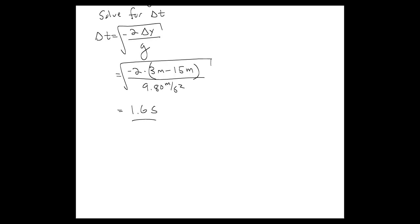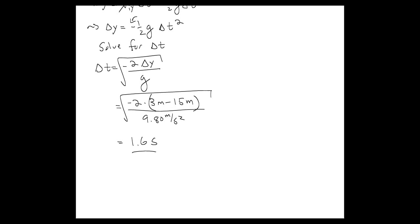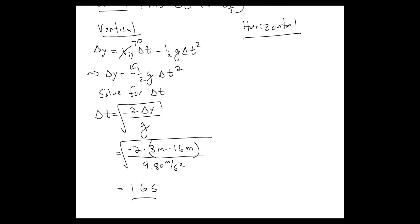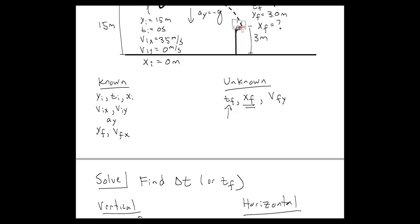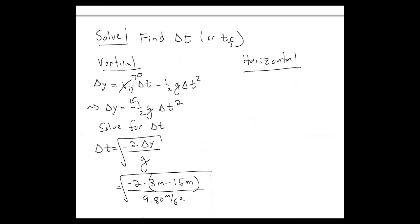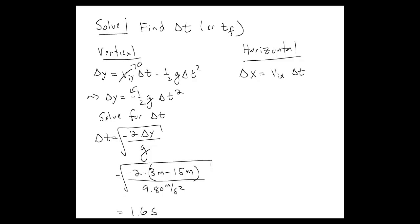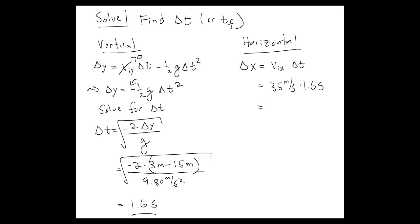Now that we've found delta t, we can use that in the horizontal direction to find what we wanted to find. We now have delta t, so we have t_f, and we can use that to find x_f. In the horizontal direction, we know the velocity and we know the time. Using the horizontal displacement expression: 35 meters per second times 1.6 seconds comes out to be around 55 meters for the displacement.